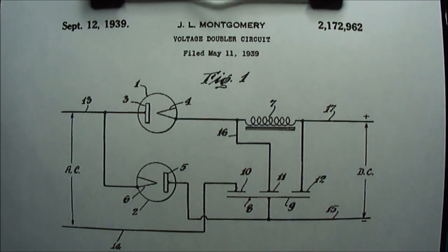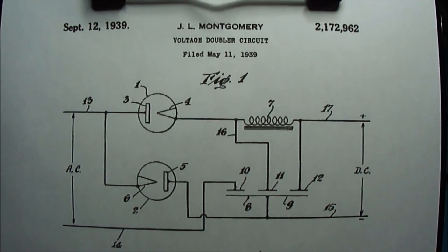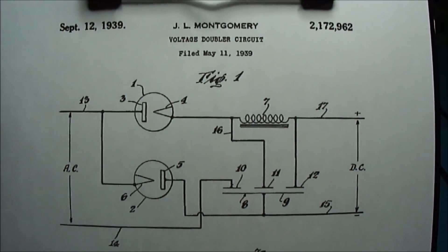The voltage tripler circuit is based on a 1939 patent by James Montgomery, titled Voltage Doubler Circuit.